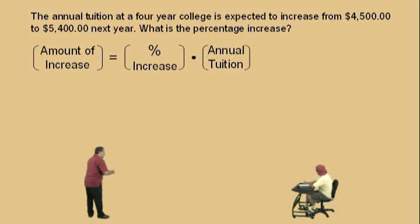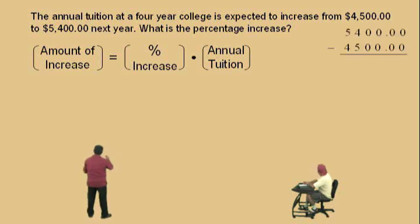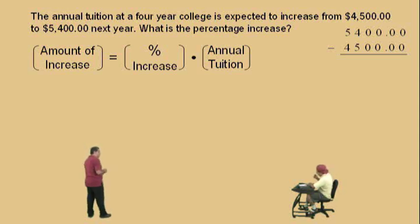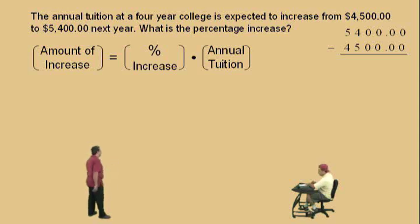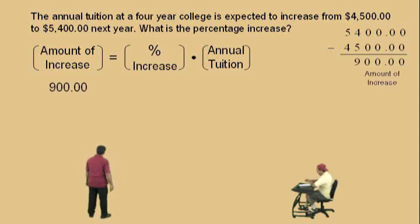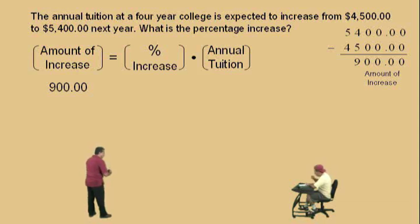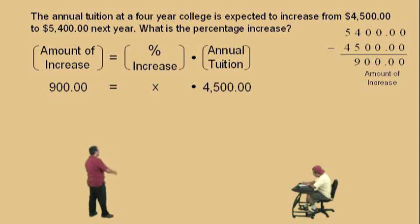But how do we get the amount of increase, Charlie? Pay attention. To get the amount of increase, we must take the difference of $5,400 and $4,500, because it increased from $4,500 to $5,400, right? So there's our difference right there. You can use your calculator to get that difference. What do you get, Charlie? 900. That's right. So that is our amount of increase. Now, in this problem, we're asked to find the percent increase and we're going to represent the percent increase with x. And our annual tuition from which the increase occurred was the $4,500.